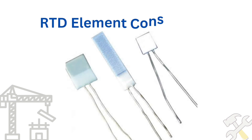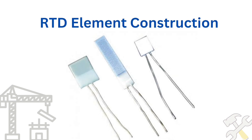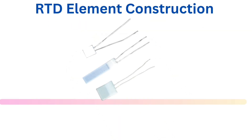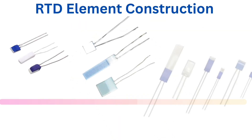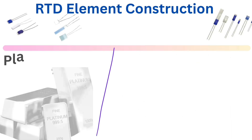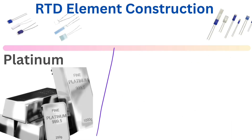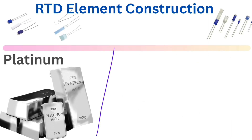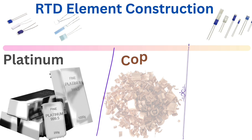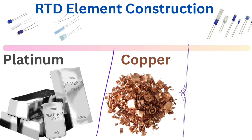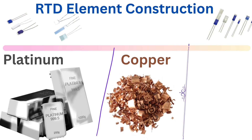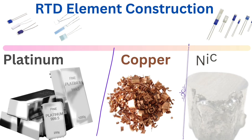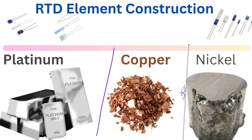Now we are going to see RTD element construction. RTD elements are made of platinum, copper, and nickel.